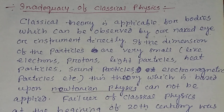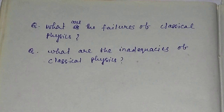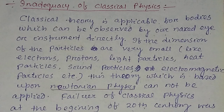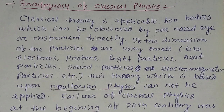Inadequacy of classical physics. Questions will come like: what are the inadequacies or failures of classical physics? Classical theory is applicable for bodies which can be observed by our naked eye or instruments directly. If the dimension of the particles is very small, then you cannot apply classical physics.